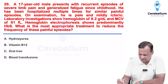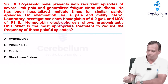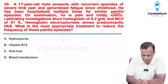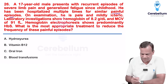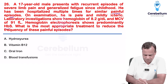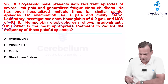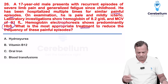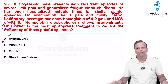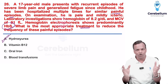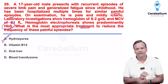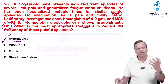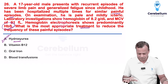A patient has sickle cell disease with painful episodes of sickle cell crisis. HbS is predominantly seen, confirming sickle cell anemia. The drug of choice for sickle cell anemia is hydroxyurea — the most commonly used drug, along with others like voxelotor and crizanlizumab.